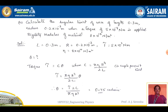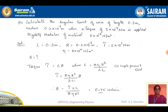One more problem: Calculate the angular twist of a wire of length 0.3 meters, radius 0.2 × 10⁻³ meters, when a torque of 5 × 10⁻⁴ Newton meter is applied. Rigidity modulus η = 8 × 10¹⁰ Newton per meter square. The length L = 0.3 meters, R = 0.2 × 10⁻³ m, torque τ = 5 × 10⁻⁴ Newton meter, and η = 8 × 10¹⁰ Newton per meter square.